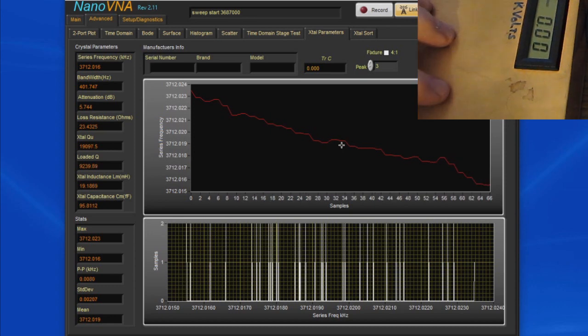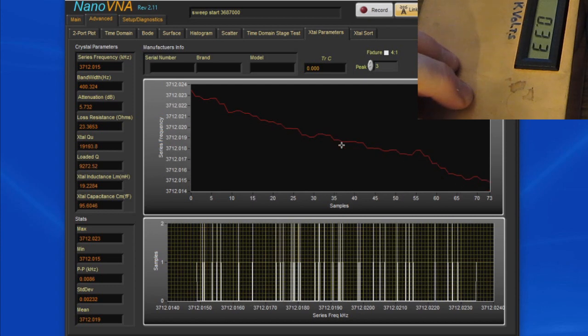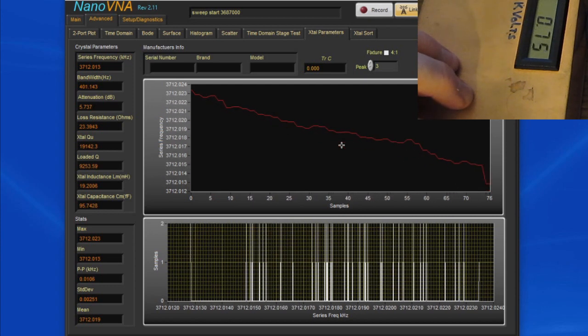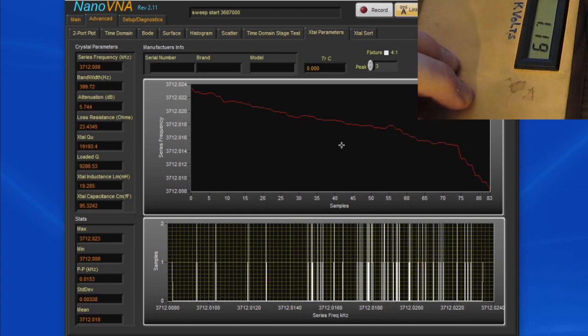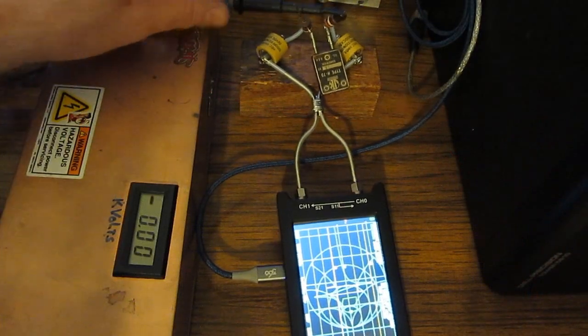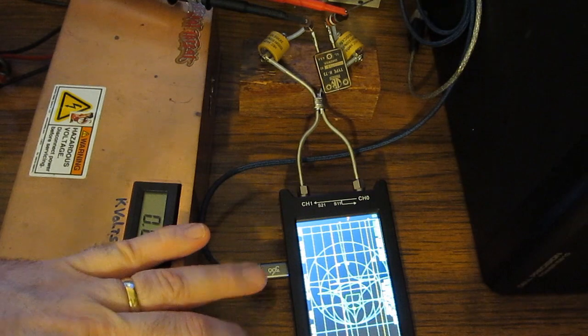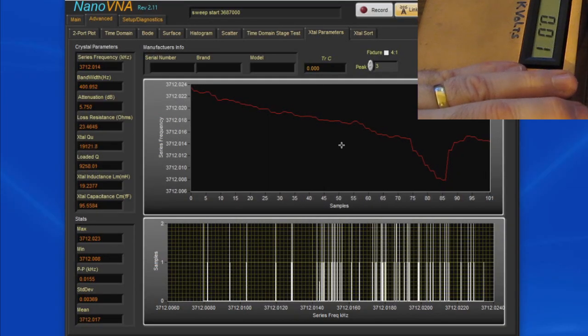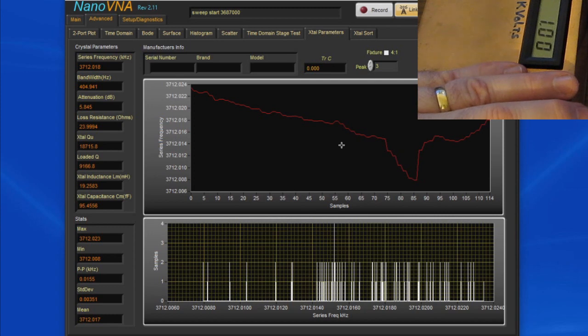And now I'm going to slowly start to increase the voltage and let's just see if we see any change in the frequency. Let's try going back the other way. Let's try inverting the two leads. I don't think this would make a difference but we are bending the crystal in the other direction. And sure enough you can see the frequency is going upwards now.